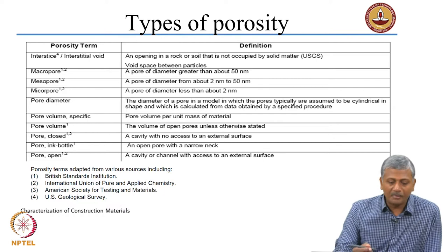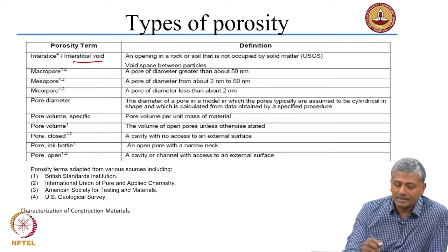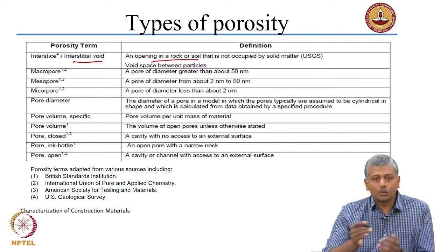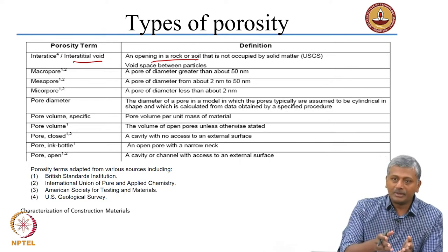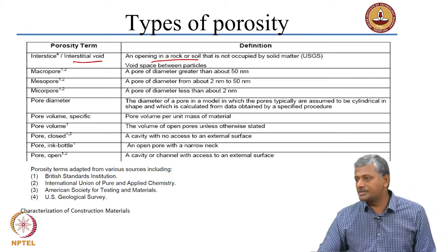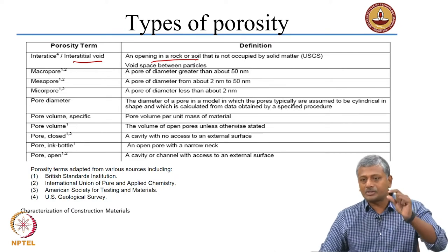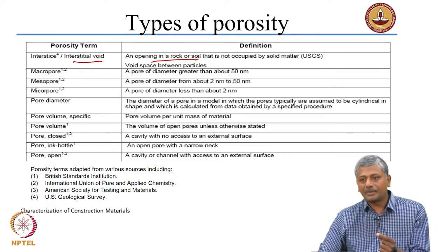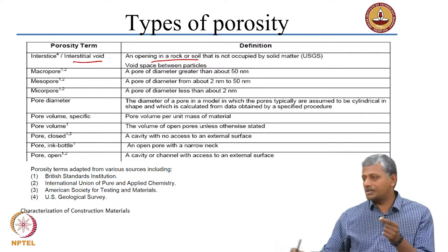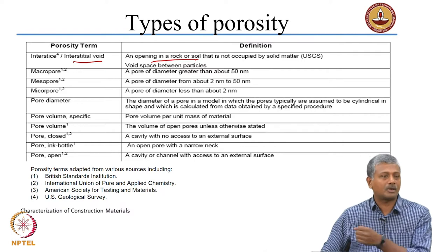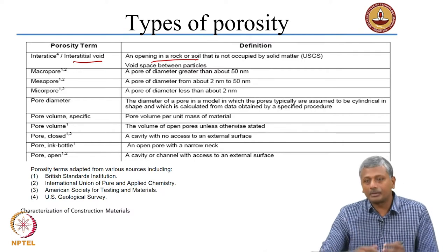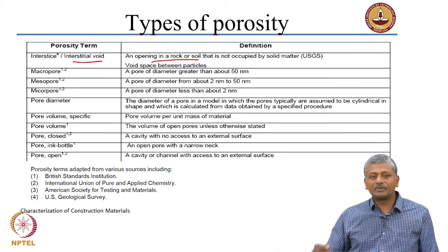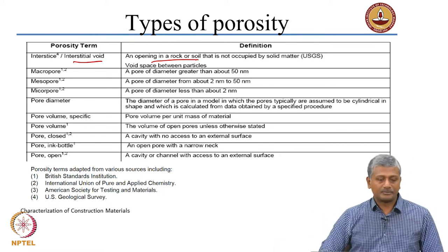The most commonly accepted definition of an interstitial void or interstice is an opening in a rock, soil, or other solid that is not occupied by solid matter. Truly speaking, a pore also falls into the category of a void, but for purposes of distinction we refer to voids as 3-dimensional spaces with finite size in all three directions. A pore, on the other hand, can have an almost infinite size in one direction, forming a channel of indefinite connected spaces in the third direction.